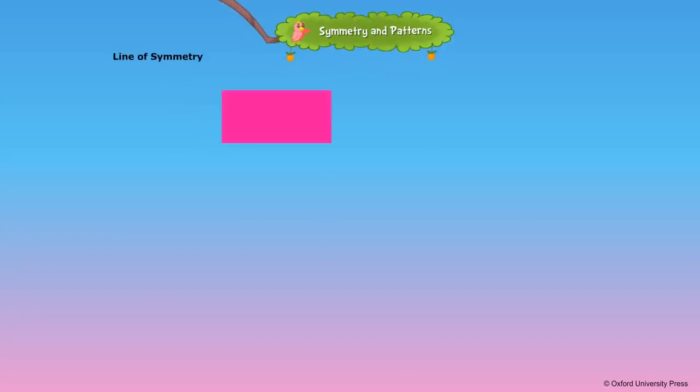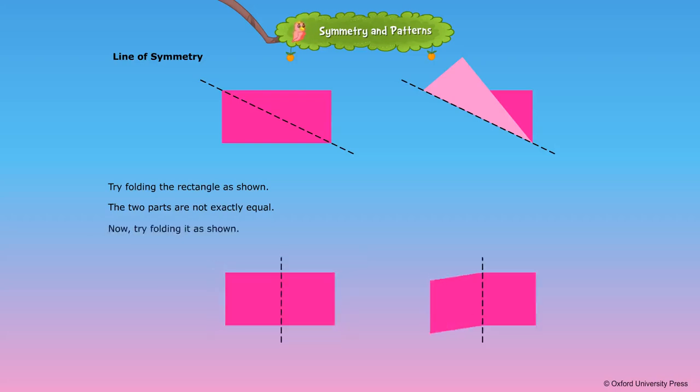Line of Symmetry. Try folding the rectangle as shown. The two parts are not exactly equal.